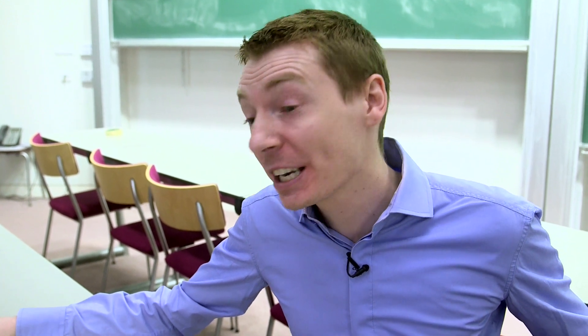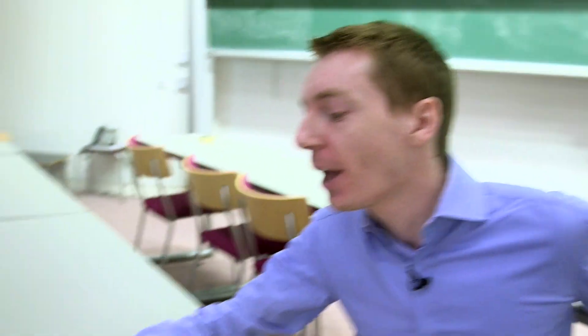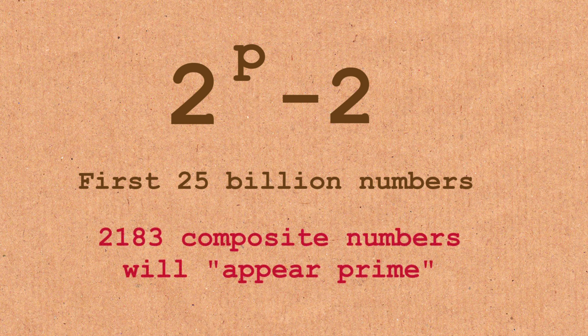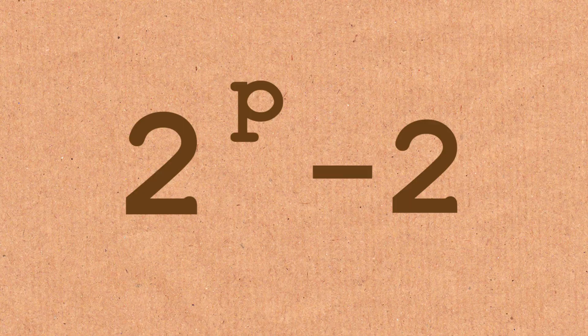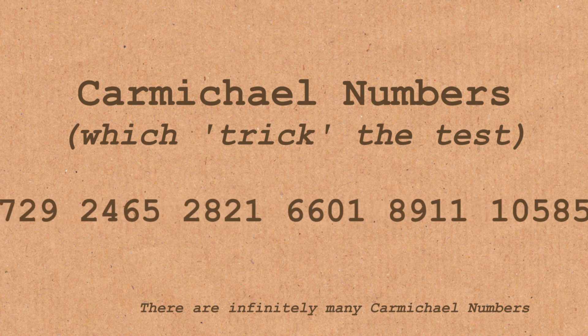Until you told me about Carmichael numbers, I thought it was a good test. Now I think it's almost useless if you're looking for perfection. Well, it is useless in that sense — it's not perfect. But if you checked all numbers less than 25 billion, the number of numbers that fail the test when using a=2 is only 2,183 out of 25 billion. So only a small fraction give false positives. And you can apply other values of a anyway, so passing this test is actually quite a high bar — it is a fairly good test.